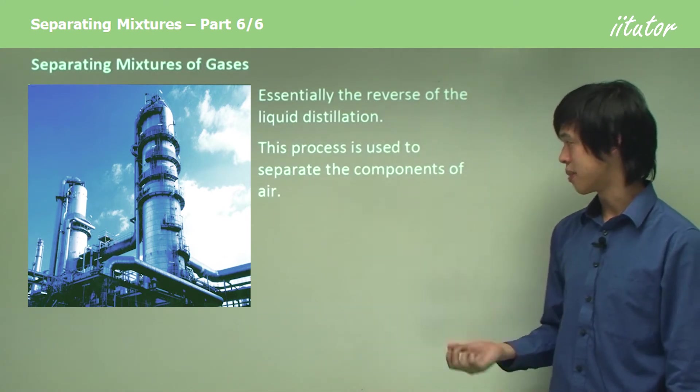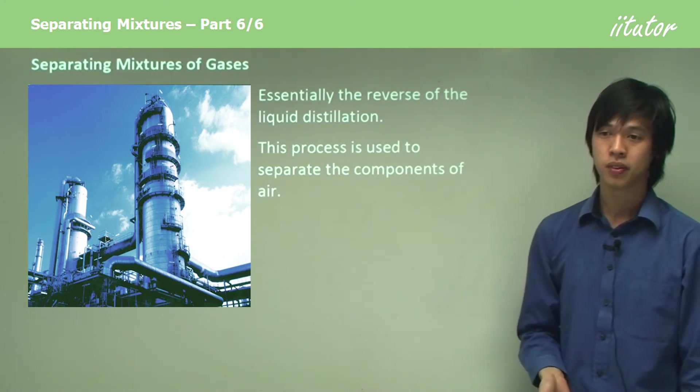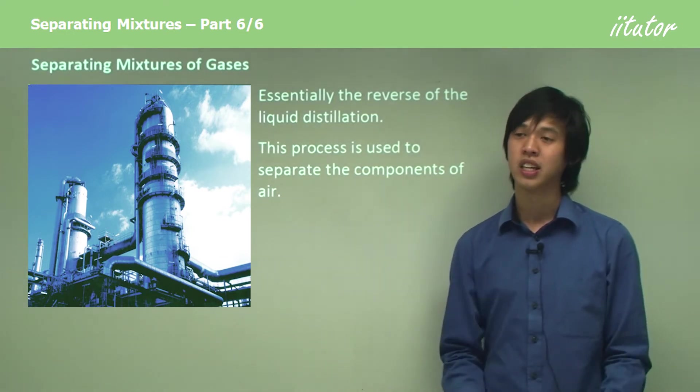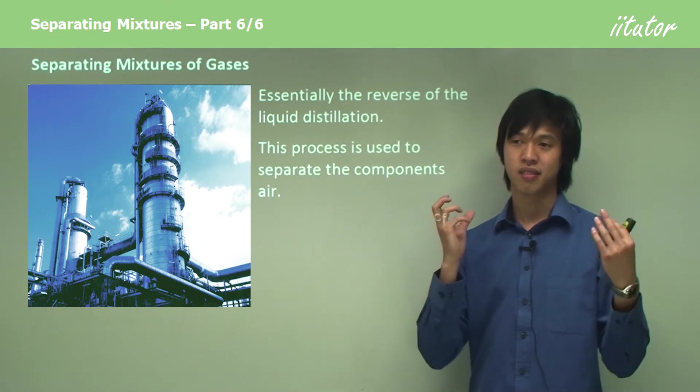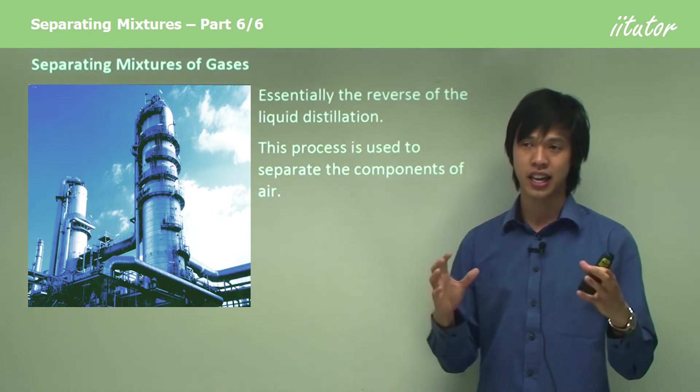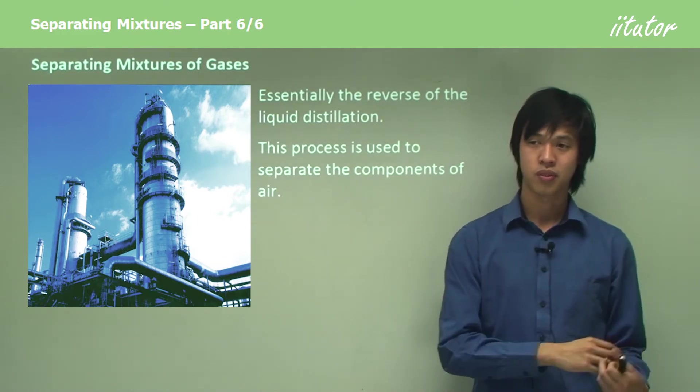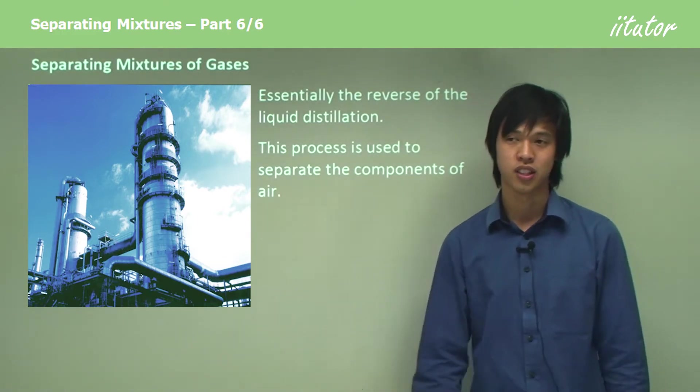This process is used to separate the components of air. For instance, if you've ever wondered how they get liquid nitrogen, they use this process. They condense the nitrogen from air into liquid and then take it away, leaving oxygen and whatever else is in the air.